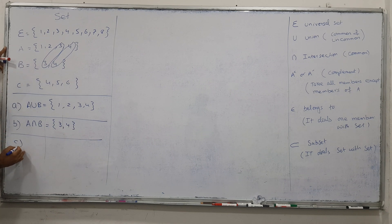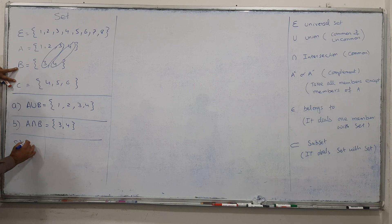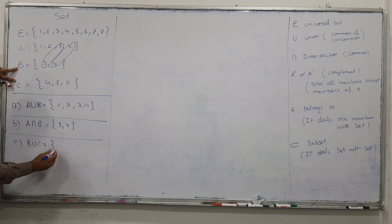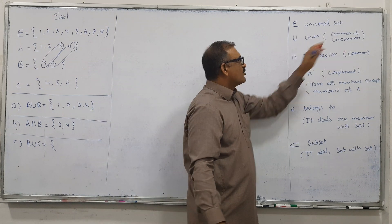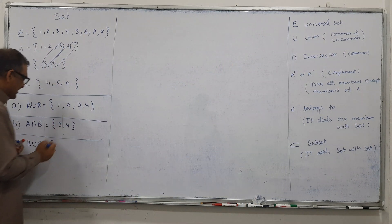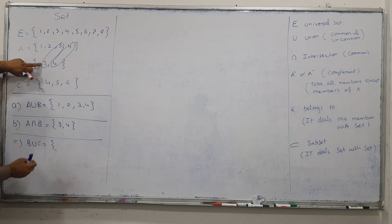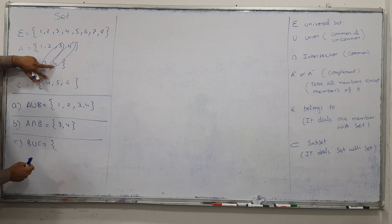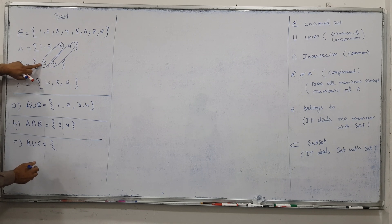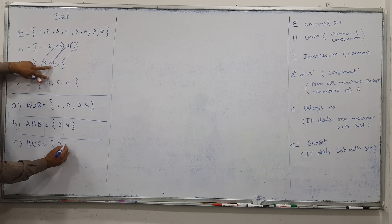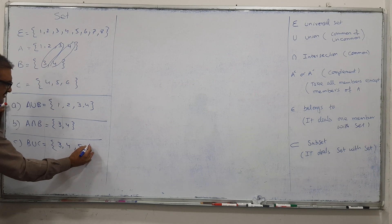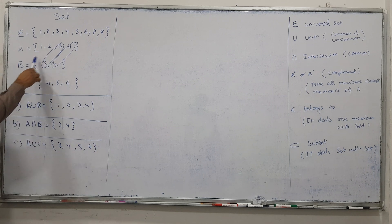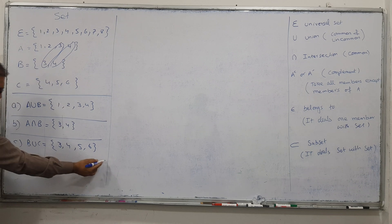Similarly, if someone asks us how to find B union C — union means common and uncommon members. So 4 is common only, and 3 is not common. So the answer is 3, 4, 5, and 6. Take all members which are common and uncommon, all together.